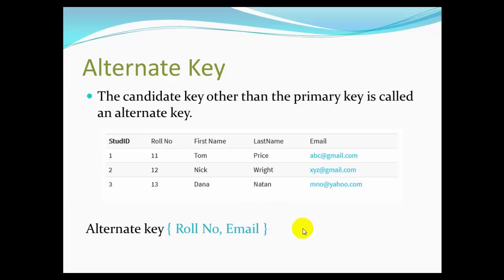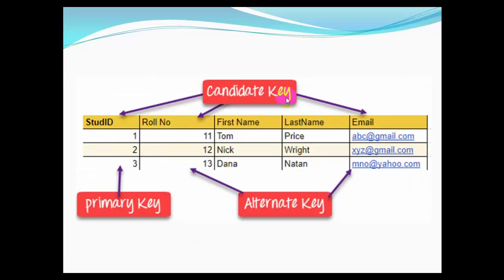When a primary key is selected from the candidate keys, the remaining candidate keys are called alternate keys. For example, if we have student id and role number as candidate keys, and student id is selected as the primary key, then role number becomes the alternate key. The other candidate keys not selected for primary key are called alternate keys.